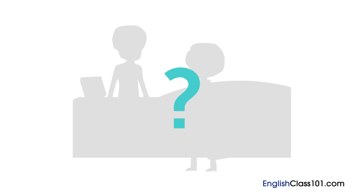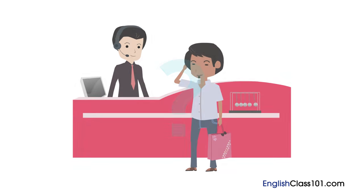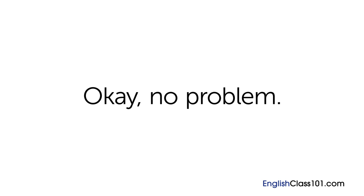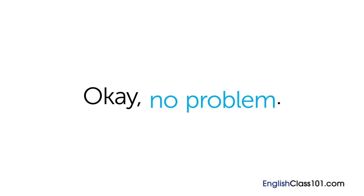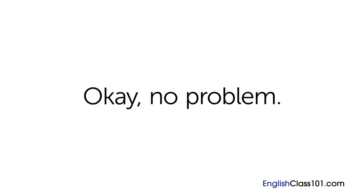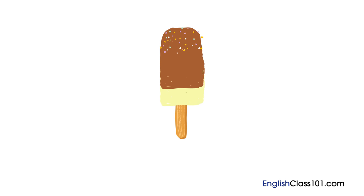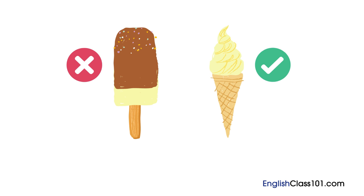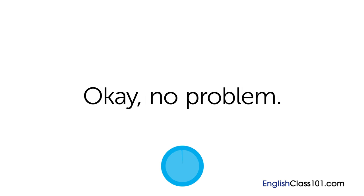Do you remember what Gustavo said after the receptionist told him that Mr. Thomas was running a little late? "Okay, no problem." First is the word "Okay," next is the phrase "No problem." Together, it's "Okay, no problem." This expresses agreement and understanding. Now you try. Imagine you ordered chocolate ice cream, but the waiter says they only have vanilla. How would you express that you are okay with vanilla ice cream? Okay, no problem.